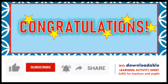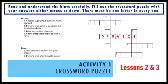Congratulations! We have just discussed selling products based on needs and demands in the school and community. It is now time to test our understanding by doing the following activities found in your activity sheet. If you do not have a copy of the activity sheet, you can download it in the description portion of this video. Activity 1: Crossword Puzzle. You are going to read and understand the hints carefully. Fill out the crossword puzzle with your answers, either across or down. There must be one letter in every box.